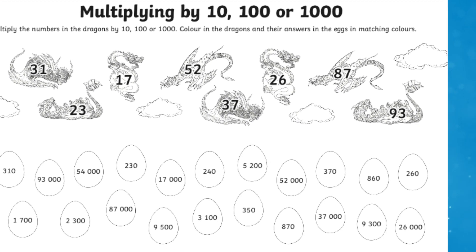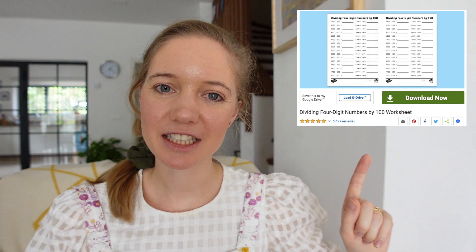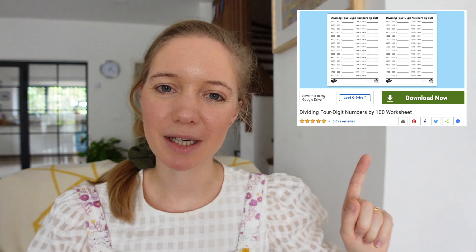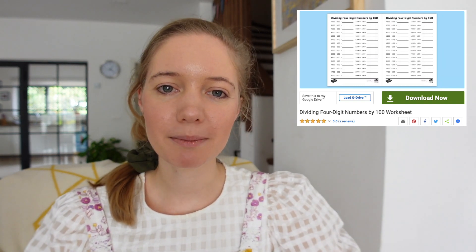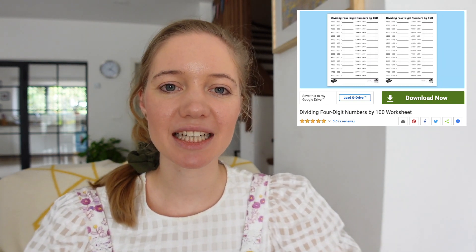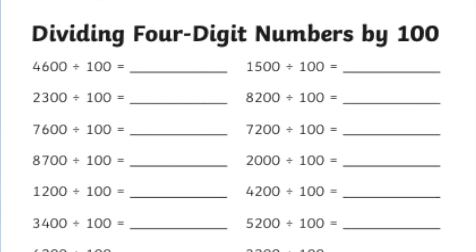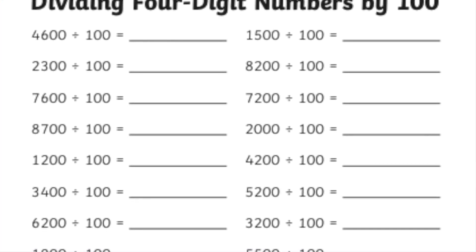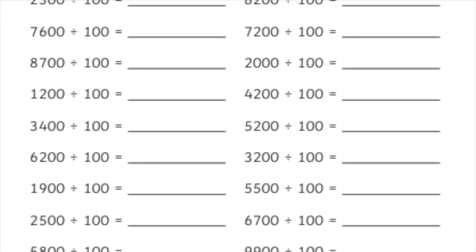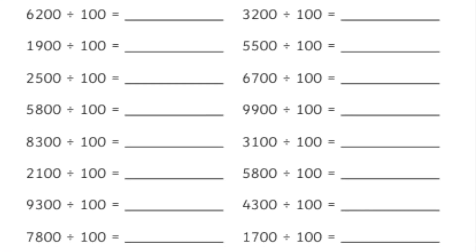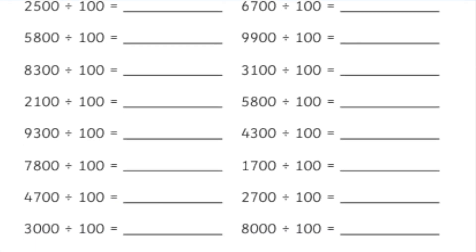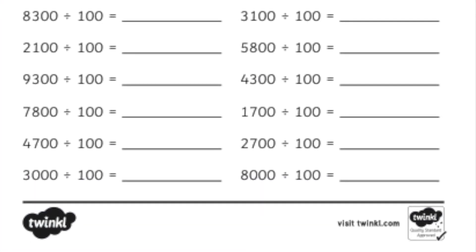Practice the Key Stage 2 skill of dividing by 100 with this Dividing 4 Digit Numbers by 100 worksheet, which will remind children how to divide numbers by 100 without the use of decimals. They will also be able to see how it affects the place value of the digits, building confidence before they move on to dividing across the decimal line.